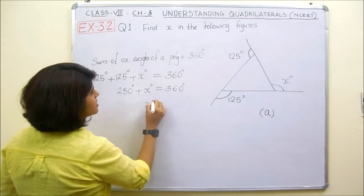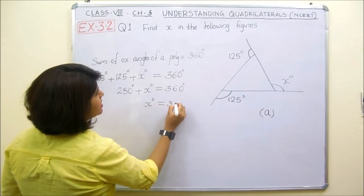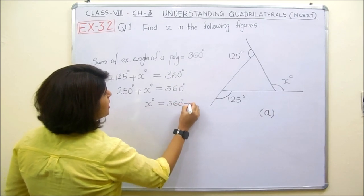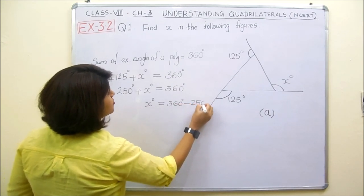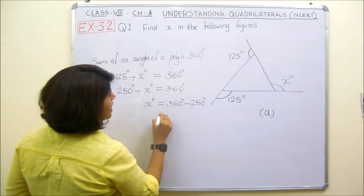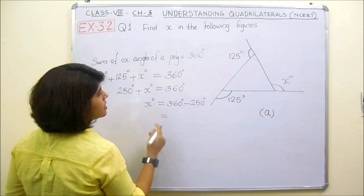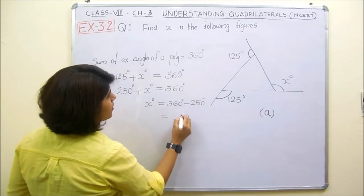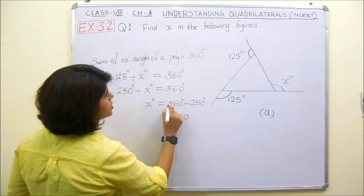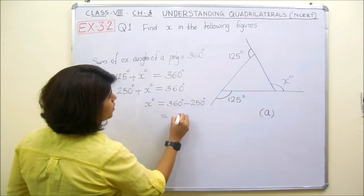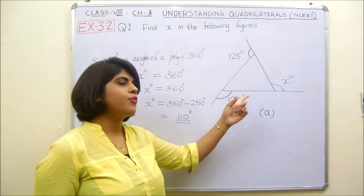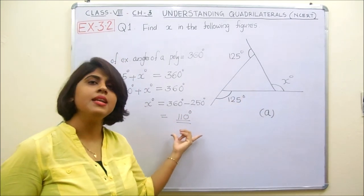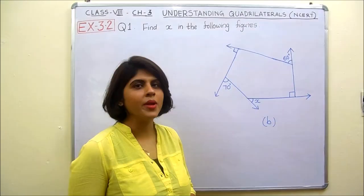Therefore, X degrees equals 360 degrees minus 250 degrees, which gives us X equals 110 degrees.